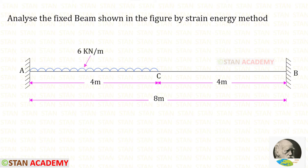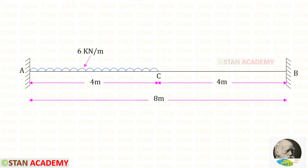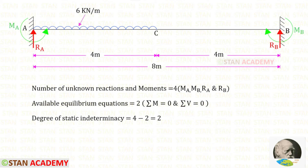Hello everyone. Today we are going to analyze a fixed beam using the strain energy method. In this beam, we have a uniformly distributed load of 6 kilo-Newton per meter acting on the left half span. The total length of the beam is 8 meters. Now let us find the degree of static indeterminacy.